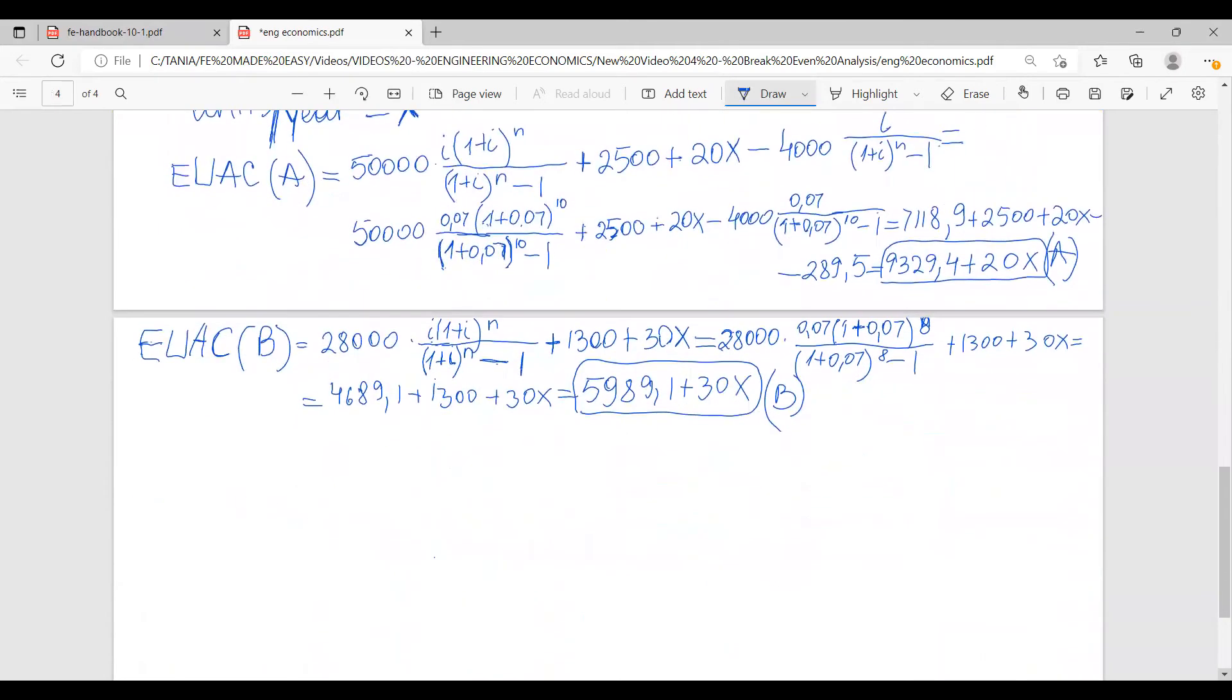So we're going to do this. Equivalent uniform annual cost of A must be less or equal to equivalent uniform annual cost of B.